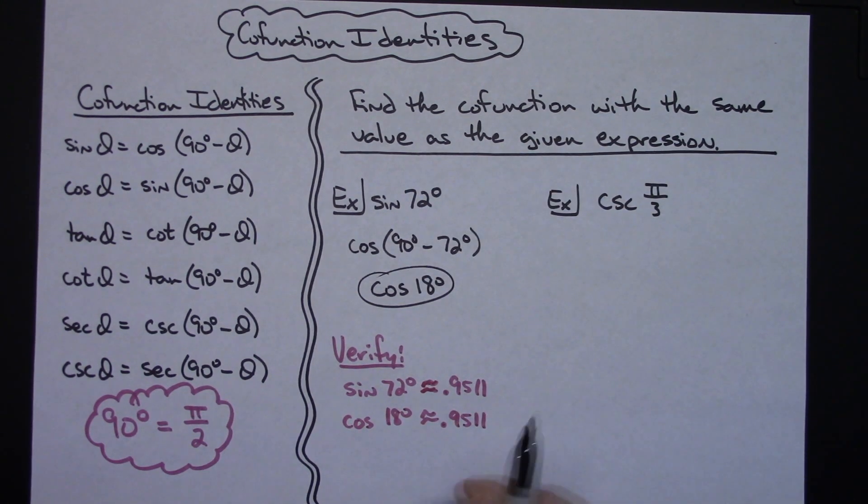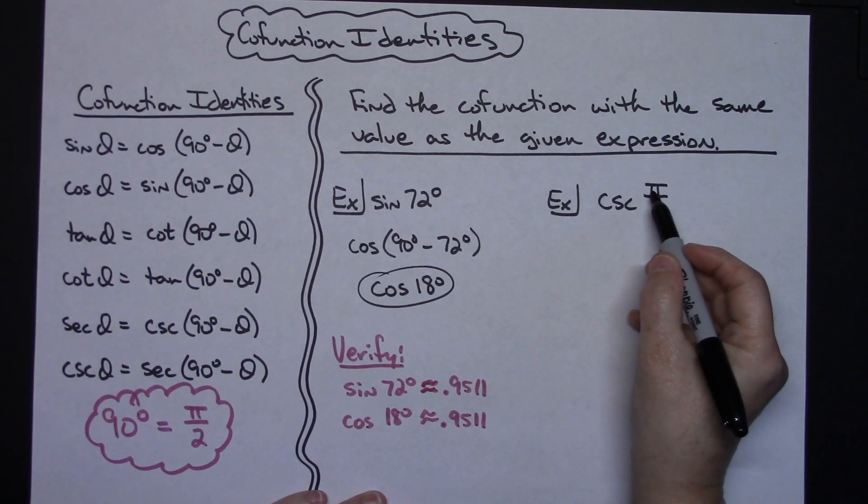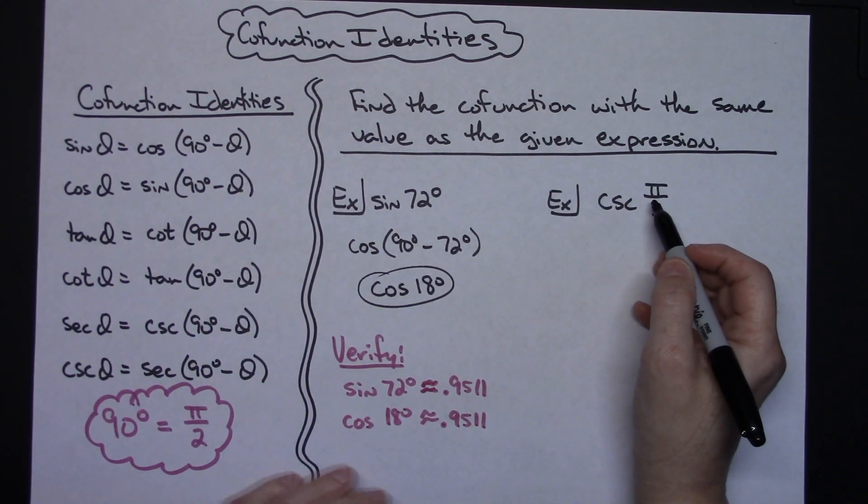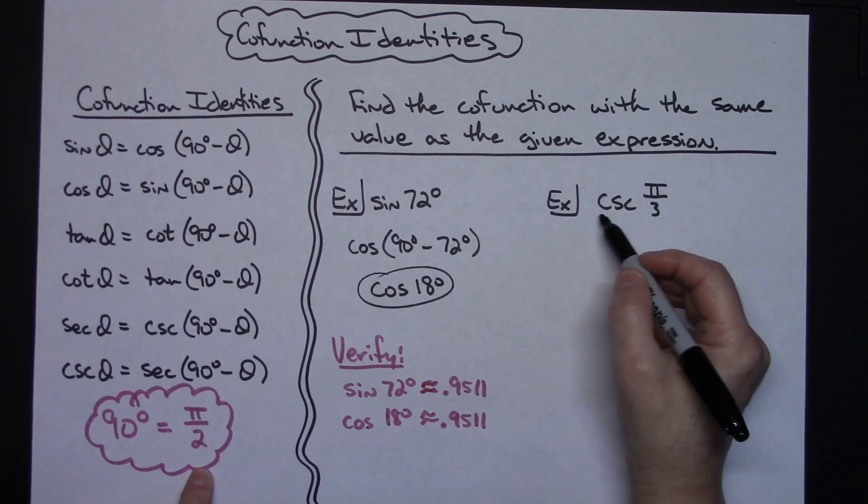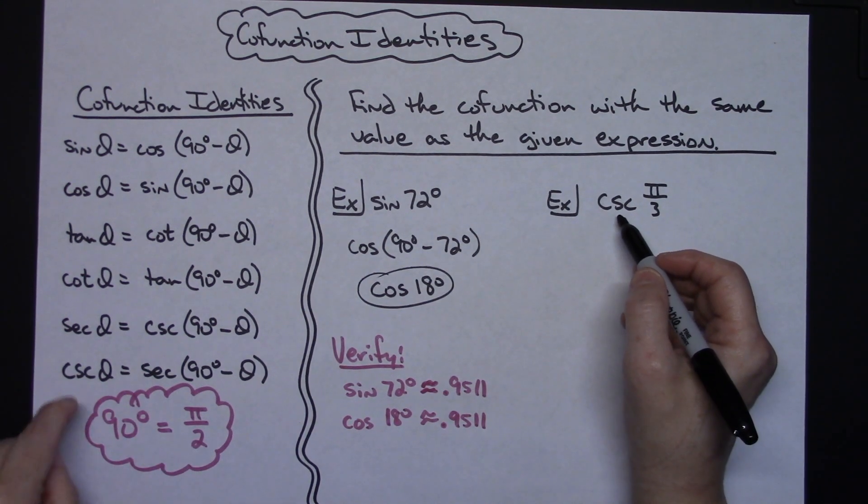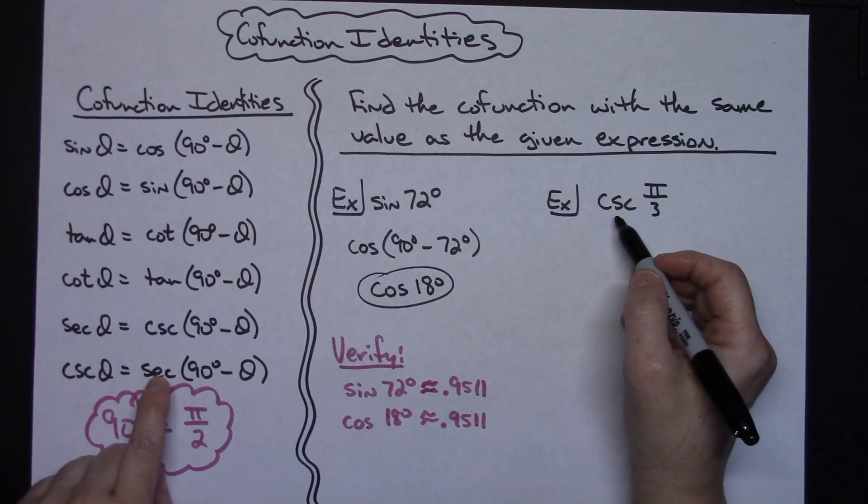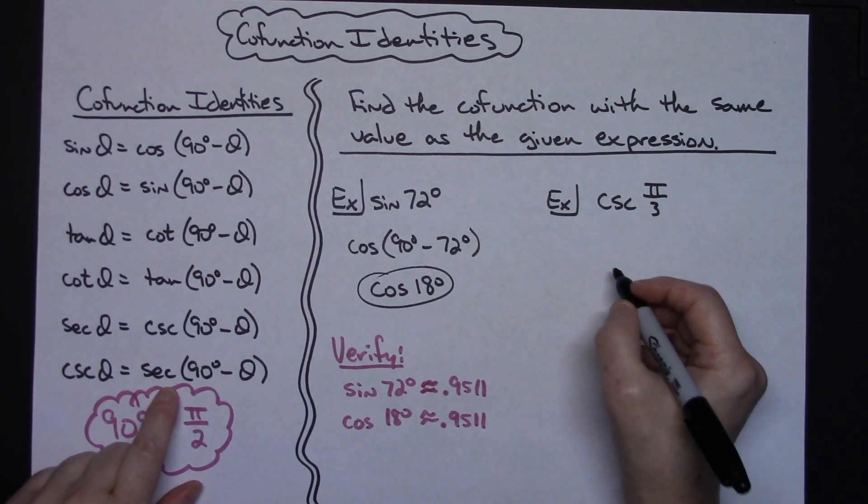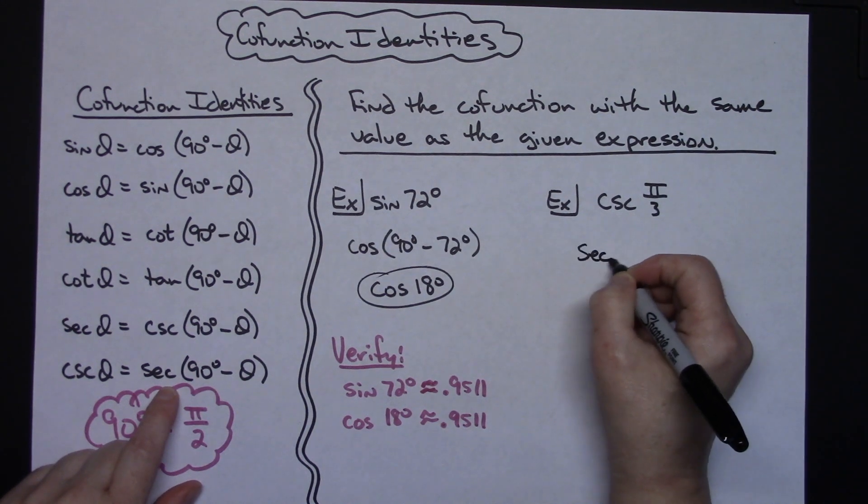So over here I've got the cosecant of pi over 3. Pi over 3 is in radians so I don't want to subtract from 90 degrees, I'm going to want to subtract from pi over 2. I also have to find the cofunction for cosecant. Well cosecant is down here at the bottom of the chart. Its cofunction is secant, so that means I'm going to follow the formula and I'm going to do the secant.